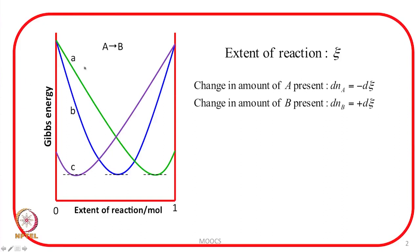Let the reaction A to B proceed by a very small amount. The change in amount of A, dN_A, equals −dξ. The negative sign indicates that A is being consumed — the concentration of A is decreasing. The change in amount of B, dN_B, equals +dξ, because B is being formed. The negative sign corresponds to reactants and the positive sign to products.